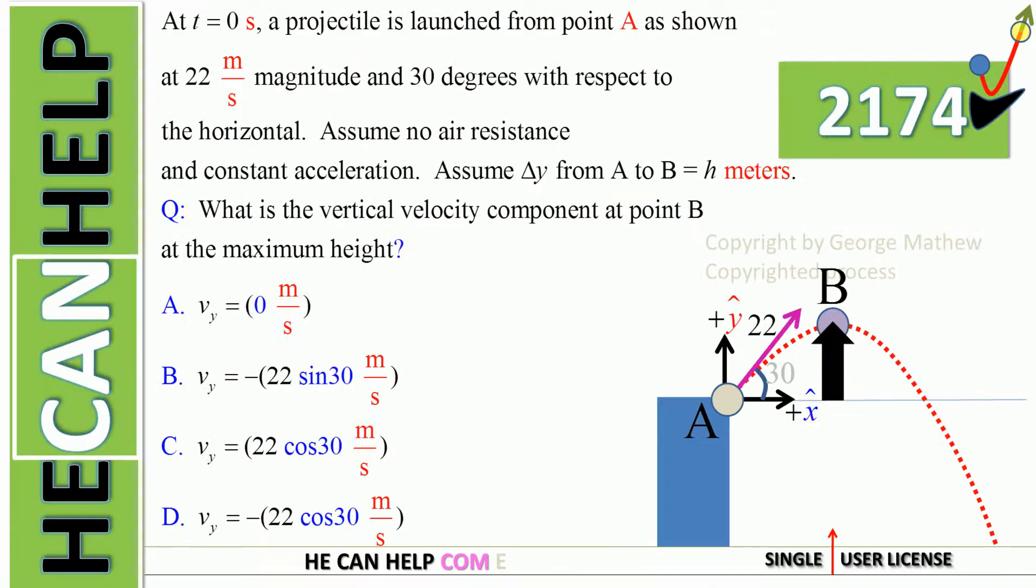Welcome to hecanhelp.com. At t equals 0 seconds, a projectile is launched from point A as shown at 22 meters per second magnitude and 30 degrees with respect to the horizontal.